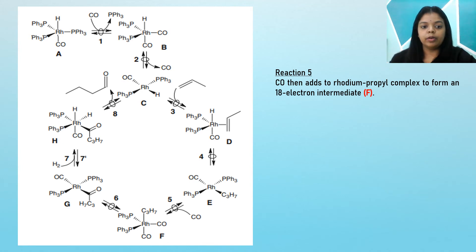Now moving on to reaction five, a carbonyl group will be added to the rhodium-propyl complex. From the rhodium-propyl complex, we will add carbonyl which will then form species F, also known as the 18-electron intermediate.